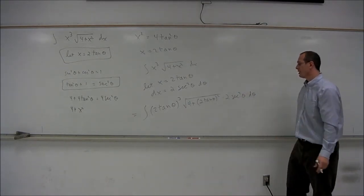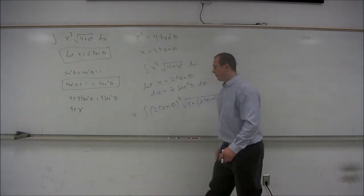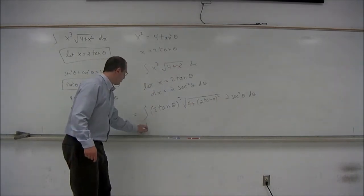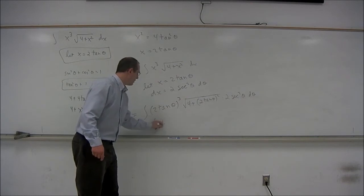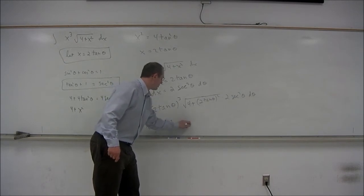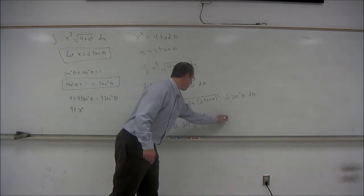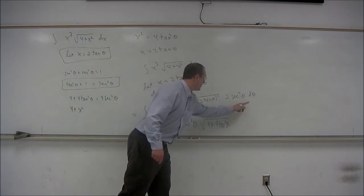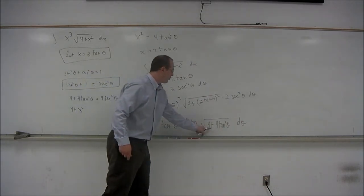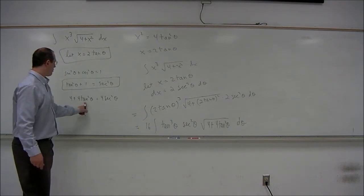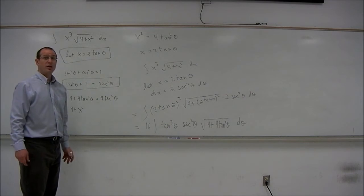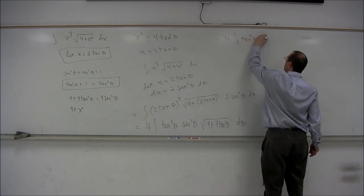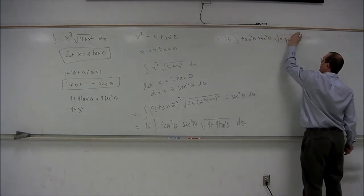Now we'll plug these into the problem. The integral becomes: x cubed is 2 tangent theta cubed, then we have the square root of 4 plus x squared where x squared is 2 tangent theta squared, and dx is 2 secant squared theta d theta. This is going to simplify very nicely — the square root is going to go away thanks to the identity. So 2 cubed is 8, and with the other factor of 2 we get 16, giving us 16 integral of tangent cubed times secant squared. Under the square root we have 4 plus 4 tangent squared theta, and by our identity that equals 4 secant squared theta, so we put that in: 16 integral tangent cubed theta secant squared theta times the square root of 4 secant squared theta d theta.